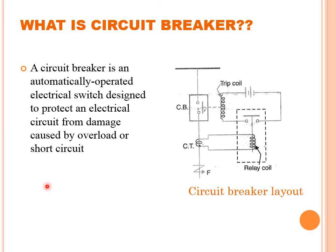At the instant of breaking, an unwanted phenomenon called arc is developed. There is a large electromagnetic discharge associated with the performance of a circuit breaker, requiring more elaborate engineering compared to simple switches. In the relay circuit layout, the line to be protected has a current transformer with its primary in series with the line. The secondary of the CT is connected in series with the relay coil, and the relay contacts are part of the trip circuit of the circuit breaker.